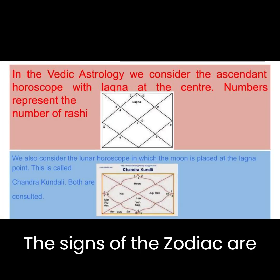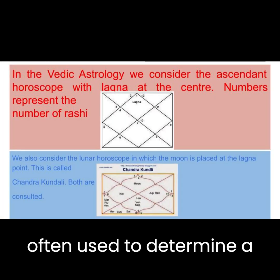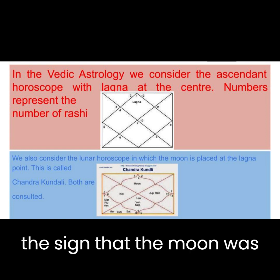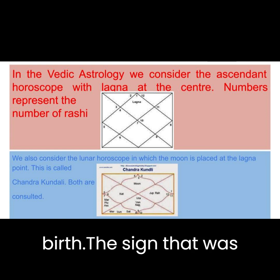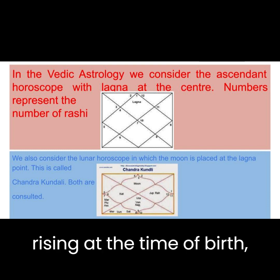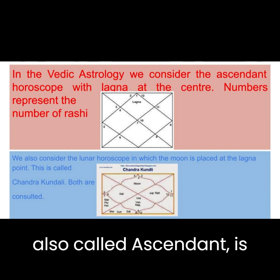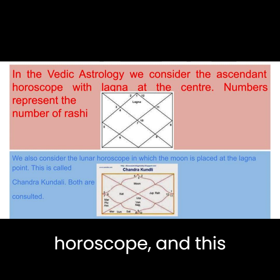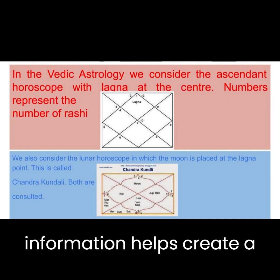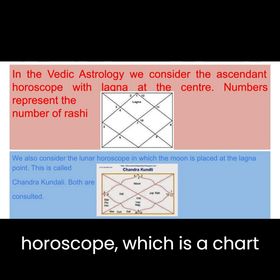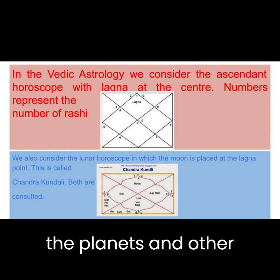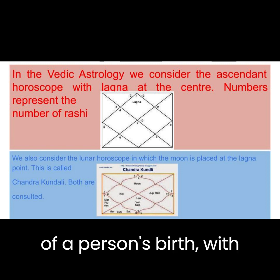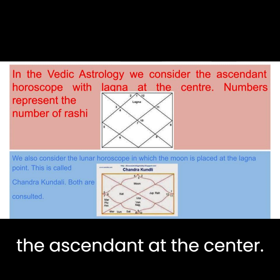The signs of the zodiac are often used to determine a person's moon sign, which is the sign that the moon was in at the time of their birth. The sign that was rising at the time of birth, also called the Ascendant, is most important in a Vedic horoscope. This information helps create a horoscope, which is a chart that shows the positions of the planets and other celestial bodies at the time of a person's birth, with the Ascendant at the center.